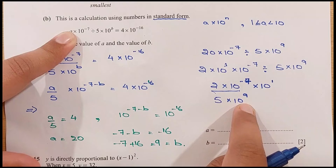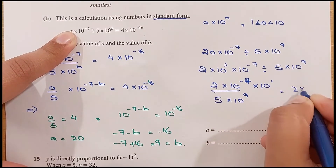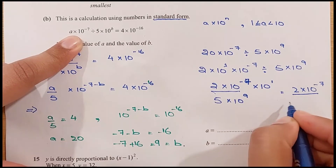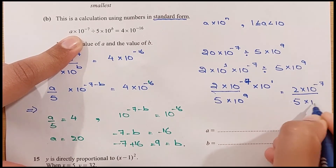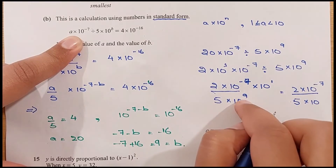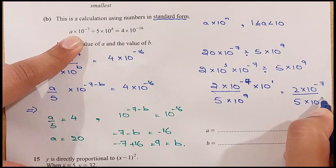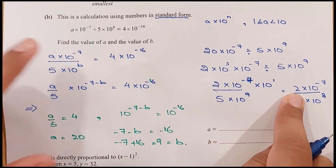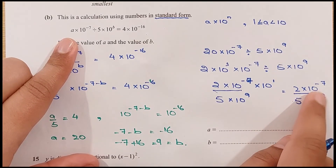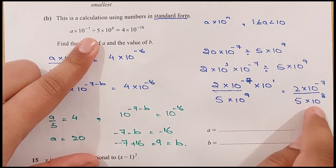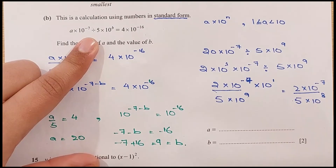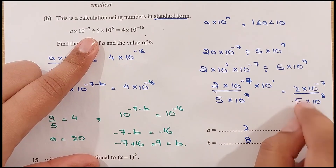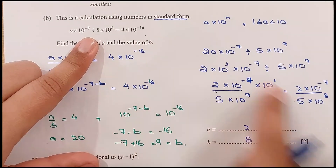We shift the extra factor of 10 into the denominator: 2 times 10 exponent minus 7, divided by 5 times 10 exponent 9 minus 1, which is 8. So we get exactly the original form: A times 10 exponent minus 7, divided by 5 times 10 exponent B. Therefore B equals 8 and A equals 2. Both 2 and 5 lie within the required range, so it is in standard form.